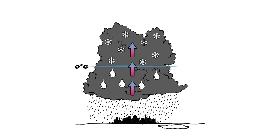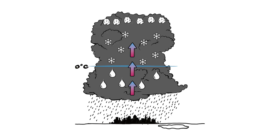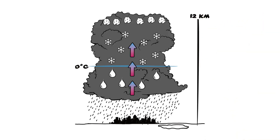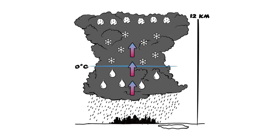On the North Sea coast, for example, the tide range is about 1 to 4 meters, while in the Baltic Sea it is only about 30 centimeters.